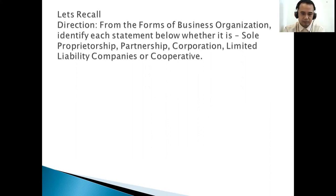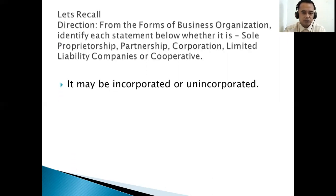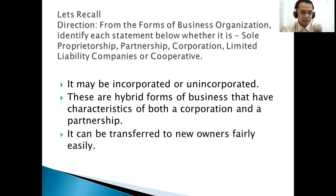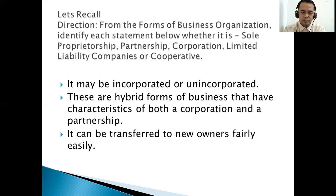We have different examples to identify. For instance: it may be incorporated or unincorporated — these are hybrid forms of business that have characteristics of both a corporation and a partnership. Another example: ownership can be transferred to new owners fairly easily. So which among those forms of business organization does each statement fall under? That is the recall activity before we go on with our topic.